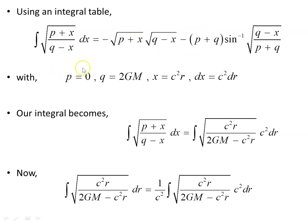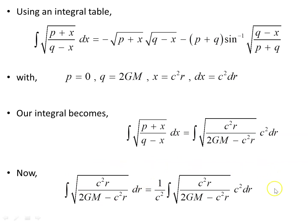Using an integral table, we set p = 0, q = 2GM, x = c²r, dx = c²dr. The integral becomes a known form with p = 0 dropping off, leaving q − x = 2GM − c²r. We need the factor of 1/c² to cancel the c² in the substitution, so the integral we're after is the integral of this object, which matches the integral table form.